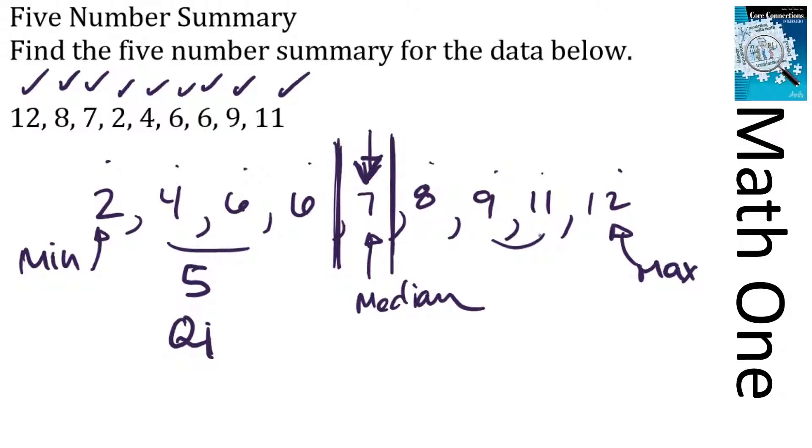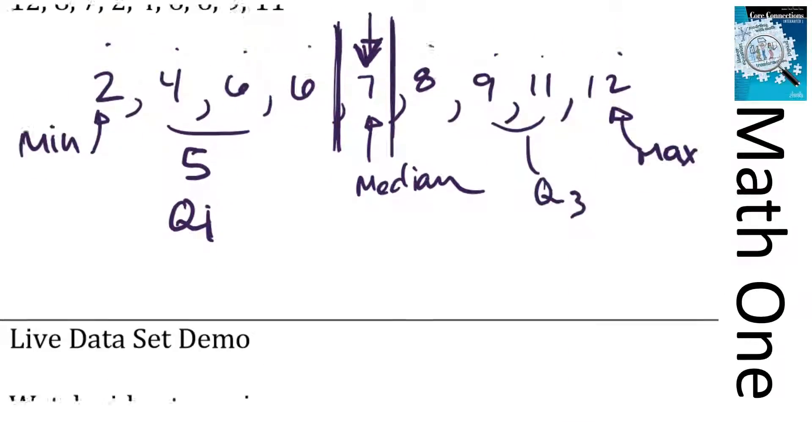And then same thing on the other hand here. If I add 9 and 11, I've got 20, and half of that is 10. So Q3 is the number 10.